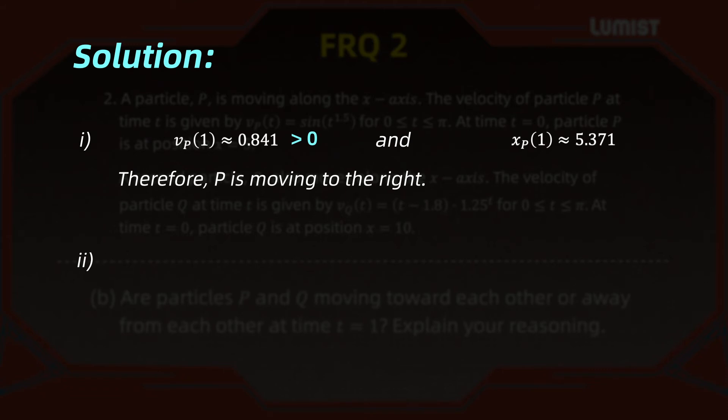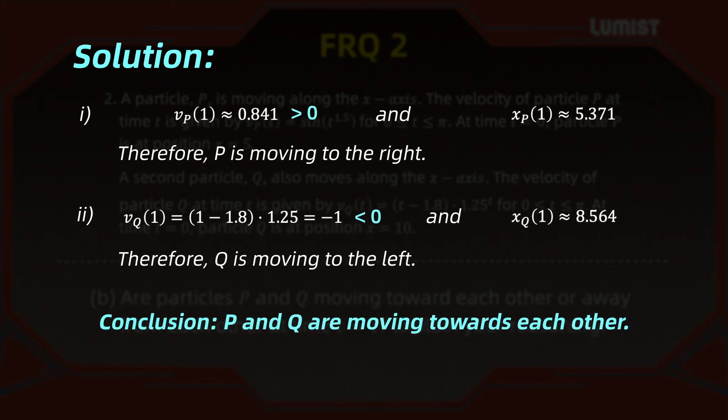Now regarding Q, what is the velocity of Q at 1? We just plug that value in. That's going to be 1 minus 1.8 times 1.25 raised to the power of 1. As you can see, this is negative. This value after plugging into a calculator gives us minus 1. Remember that the position of particle Q when t equals 1 is approximately 8.564 from part A. So particle Q is to the right of particle P, but the velocity is negative. That means Q is moving to the left and P is moving to the right. In other words, they are moving towards each other.